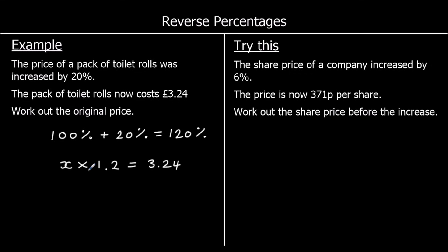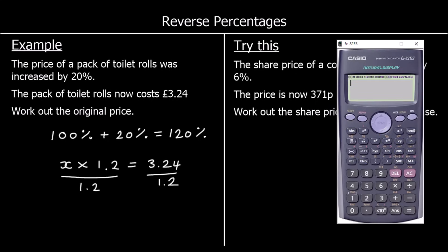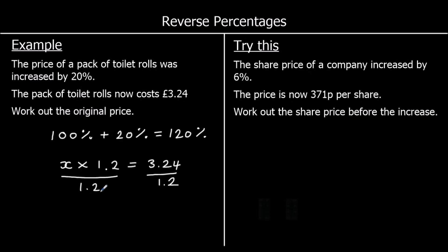So if the original times 1.2 equals £3.24, we can find the original by dividing both sides by 1.2. So if I divide both sides of this equation by 1.2, I will get 3.24 over 1.2, which is 27 over 10. I press S to D button and get 2.7. So I can say x is equal to 2.7, or because it's money, that will be £2.70.